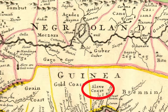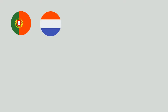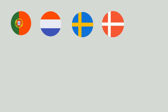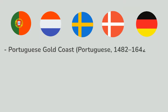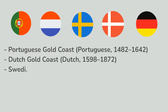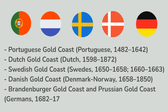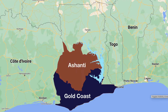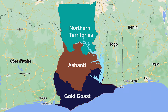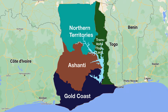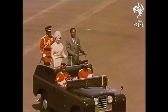The Europeans also named subsections of the areas based on the commodity they traded — sadly, the slave coast was included. Several European countries had a share of the Gold Coast at various periods: Portuguese Gold Coast, Dutch Gold Coast, Swedish Gold Coast, Danish Gold Coast, Brandenburger Gold Coast, and Prussian Gold Coast — these were Germans. Initially, before independence, there were the Gold Coast Colony, Ashanti Protectorate, Northern Territories, and Trans-Volta Togoland.